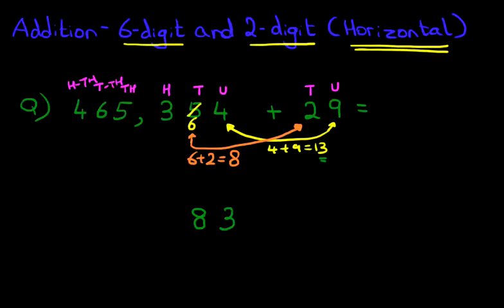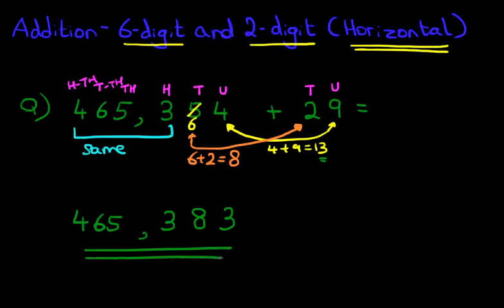Therefore the rest of the digits, these will remain the same in this example. So we can just write those down over here. The three over here and the four hundred and sixty-five over here. So that is our answer. Four hundred and sixty-five thousand three hundred and eighty-three.